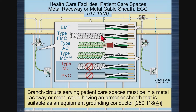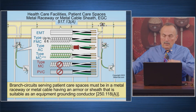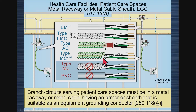That includes: EMT, which is an equipment grounding conductor; flexible conduit up to six feet for circuits up to 20 amperes; armor cable with the 18-gauge aluminum bonding strip; and MC cable where you have a 10-gauge aluminum bonding strip that bonds each convolution — that wiring method is considered an equipment grounding conductor. Traditional MC cable with only a green wire and no aluminum bonding strip is not an equipment grounding conductor, and PVC obviously is not either.